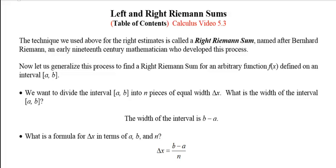So we want to divide an interval of x values, or input values, [a, b], into n pieces of equal width Δx. So the first question is, what's the width of the interval? Well, if the interval goes from a to b, the width of that is just b minus a.